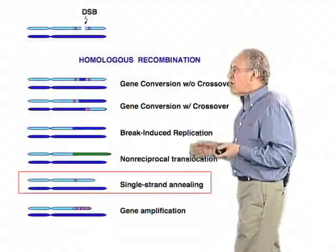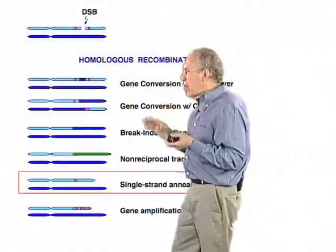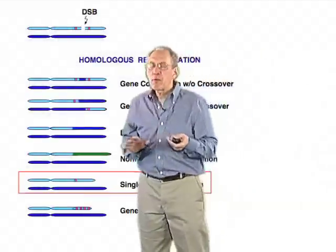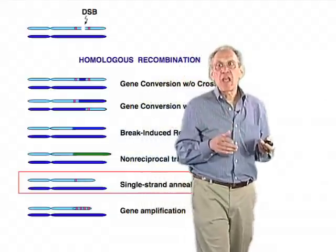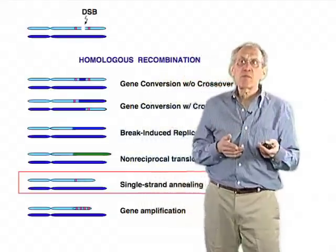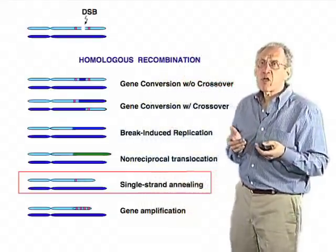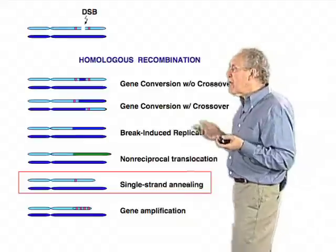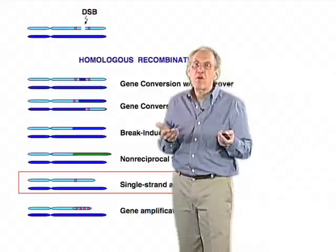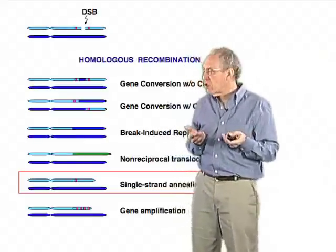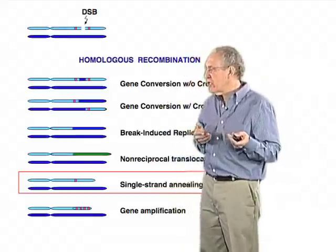We've talked about break-induced replication. Now I'm going to start talking about the other mechanisms of homologous recombination, and I'm going to actually start with one that is by far the simplest, called single-strand annealing.